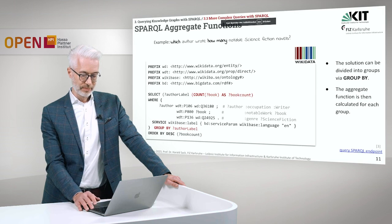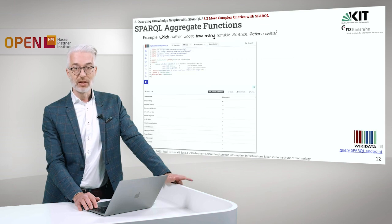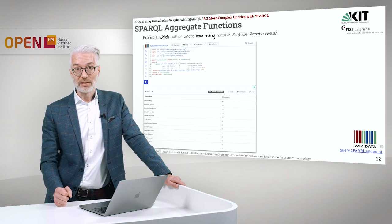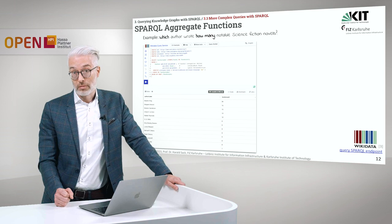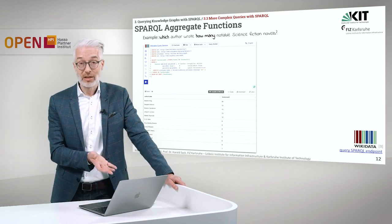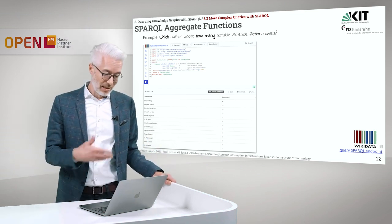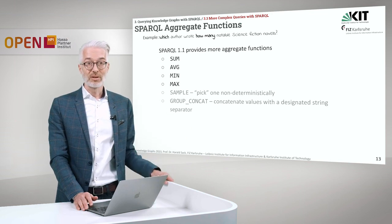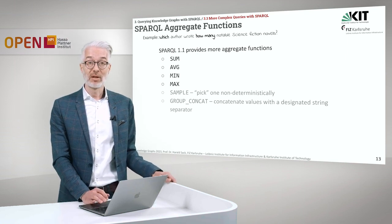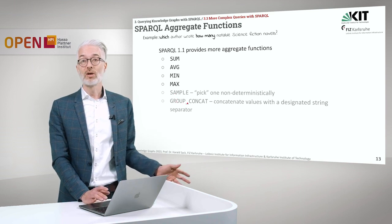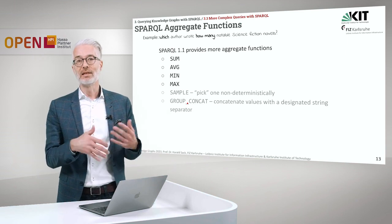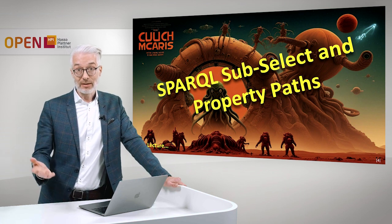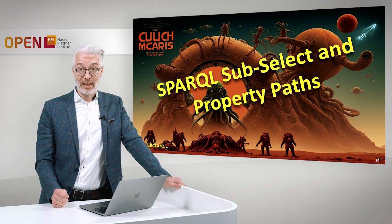That was GROUP BY with aggregate functions. If you try this on your own and get a different number — say Stephen King is listed with more than 36 books — then probably he has written a new book. We are recording this in March and it will be published in October, and Wikidata is continuously changing, so these results are subject to change. SPARQL 1.1 provides more aggregate functions: average, minimum, maximum, sample, and also GROUP_CONCAT, which concatenates values with a designated string, allowing you to transform your output in a specific way. In the next part of the lecture we will dive deeper into so-called sub-selects and property paths.